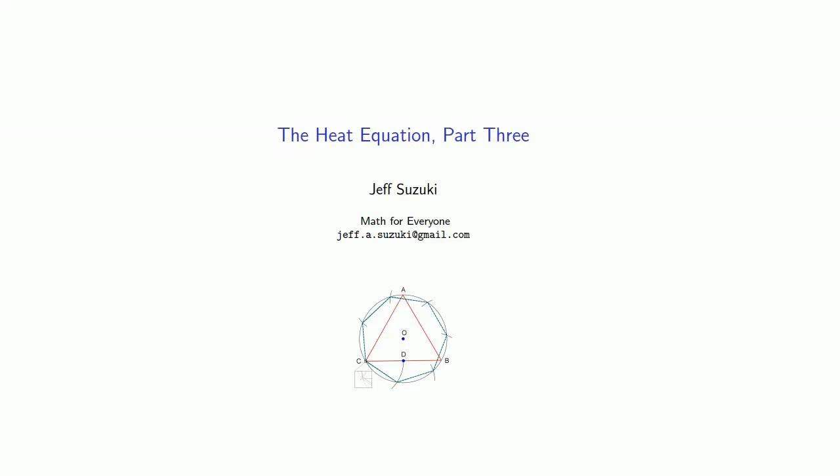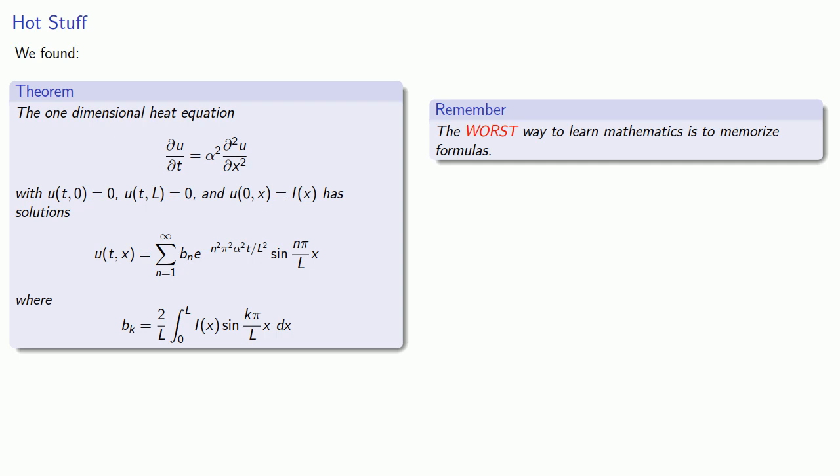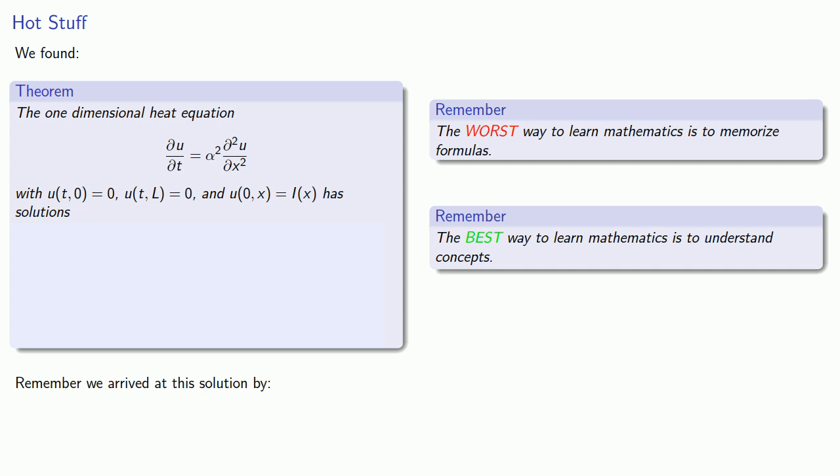Now that we have some idea of how to solve the one-dimensional heat equation, let's actually try to solve it. We found a solution with given boundary values with this formula. But remember, the worst way to learn mathematics is to memorize formulas. The best way to learn mathematics is to understand concepts. Remember, we arrived at the solution through two steps.